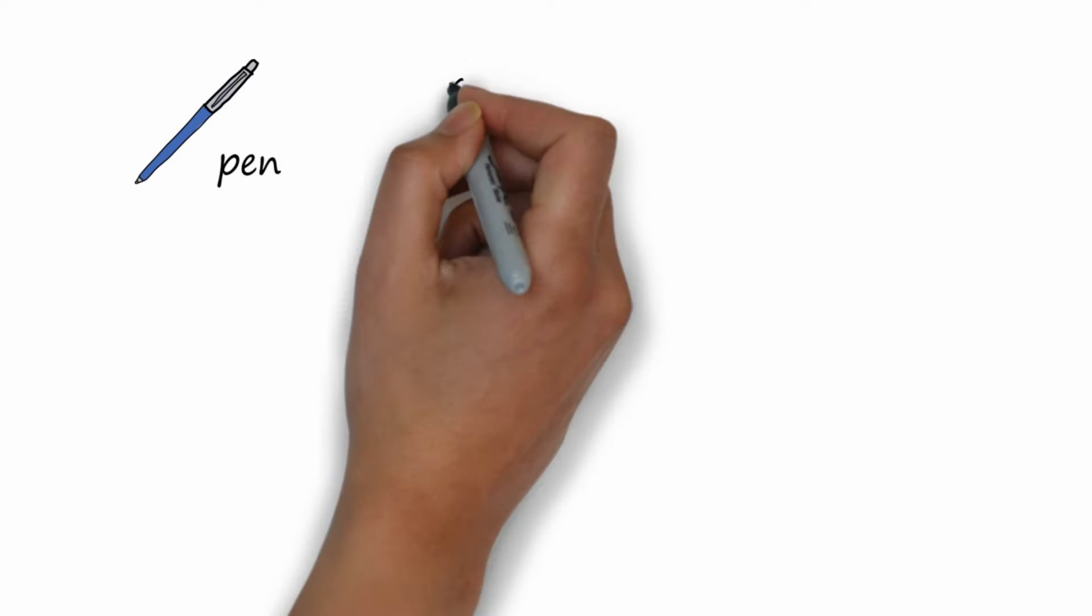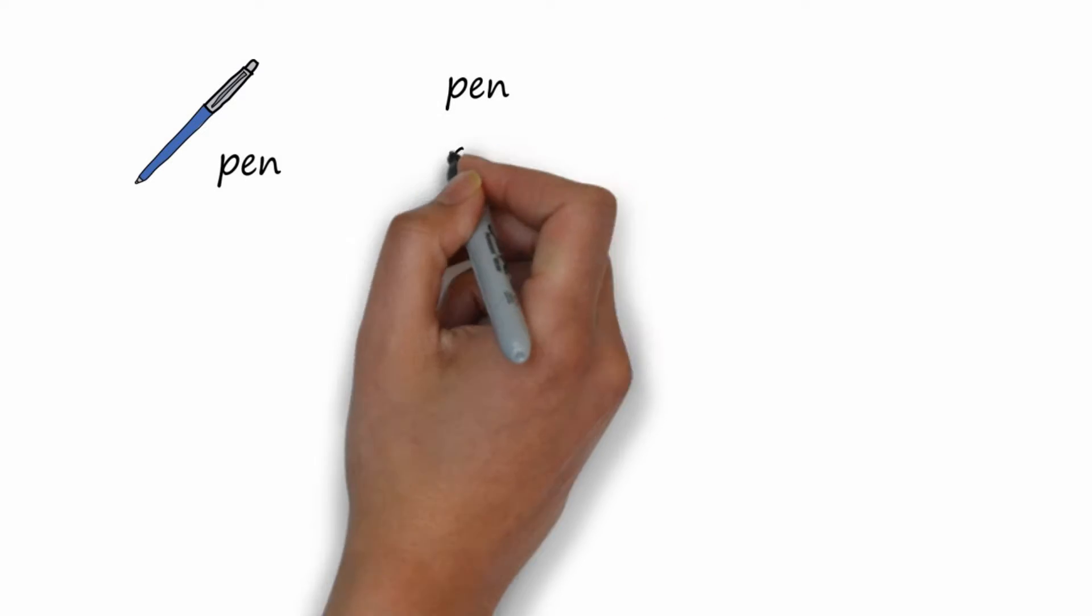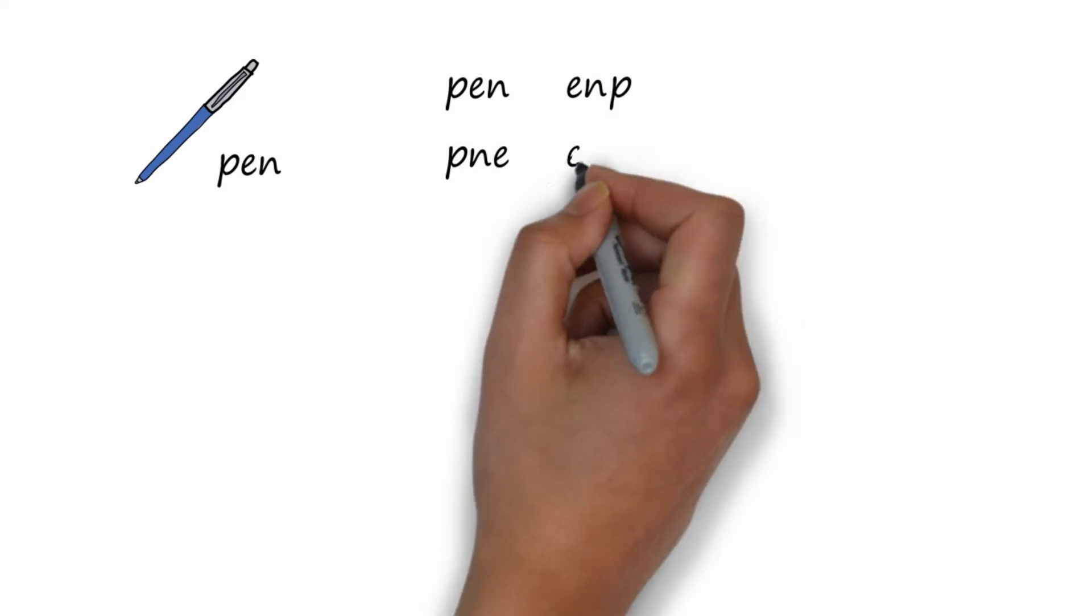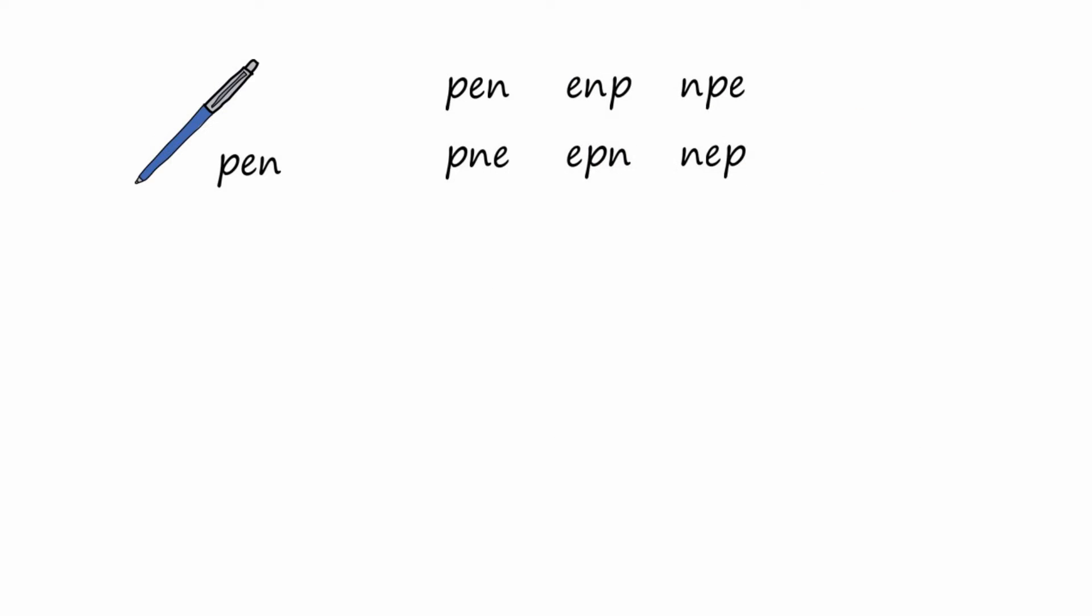We can list them. We'll kind of be organized about it. We'll start with the letter P first, then the letter E first, and then the letter N first, and you can see there six ways to do it.